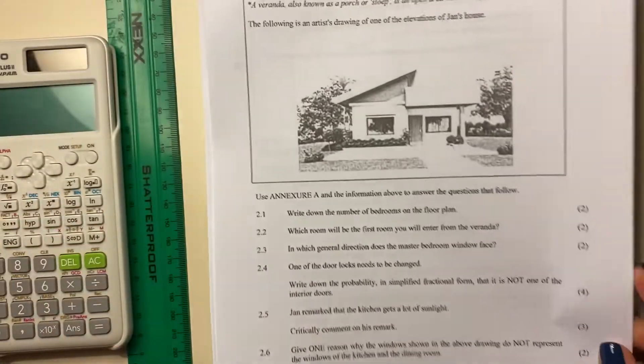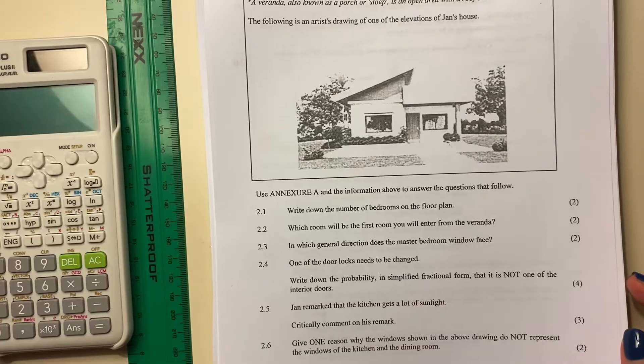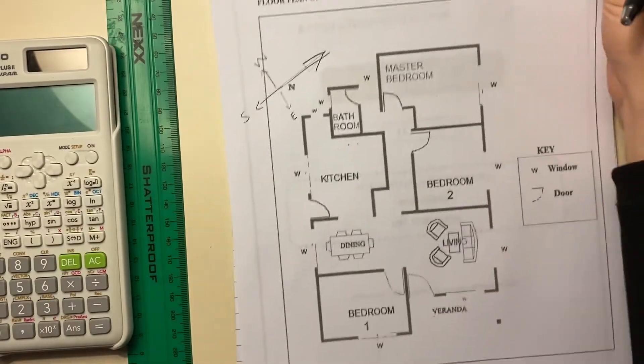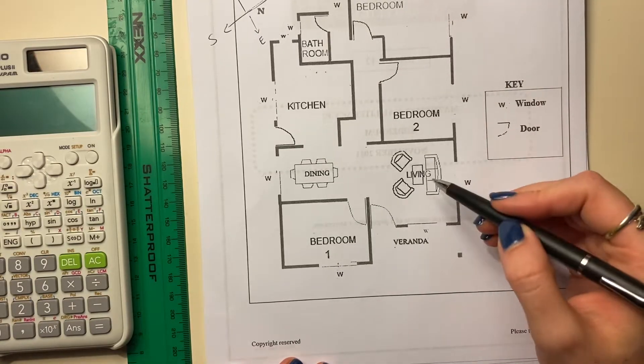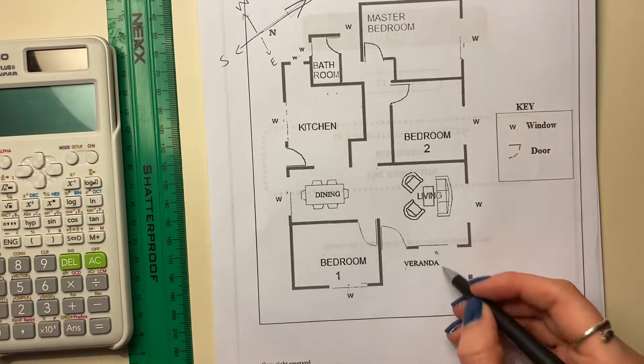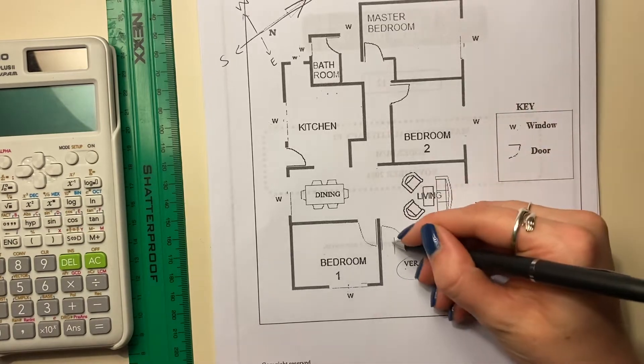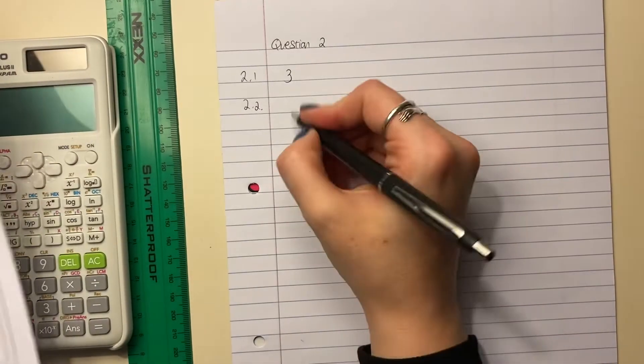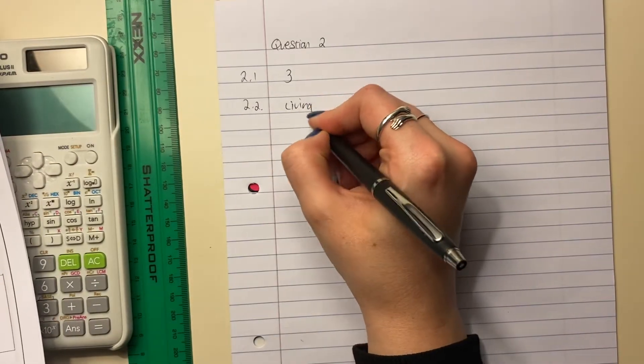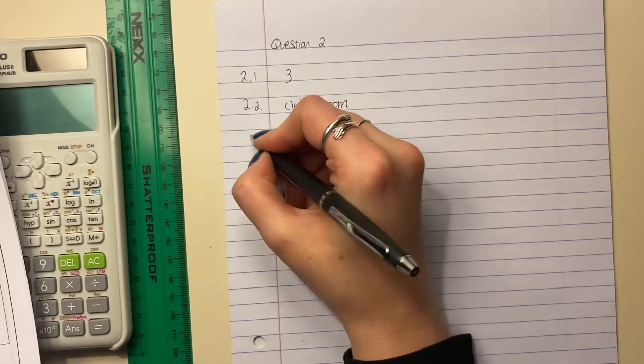Let's look at the next question. Which room will be the first room you will enter from the veranda? So on the veranda, you live in your best. So over here. And if you want to get into the house, you're going to enter the living room. So always just note where you are. And if you enter, this is the only door you can enter the house from, the veranda. So to be the living room.